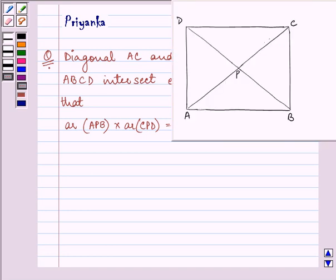Now let's have a figure. This is a quadrilateral ABCD whose diagonals are intersecting at point P.